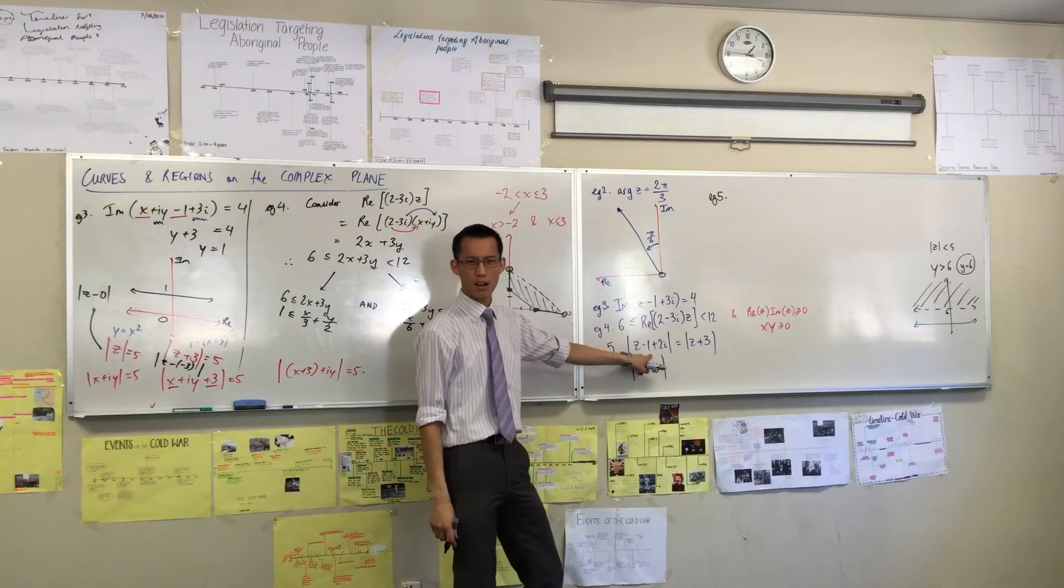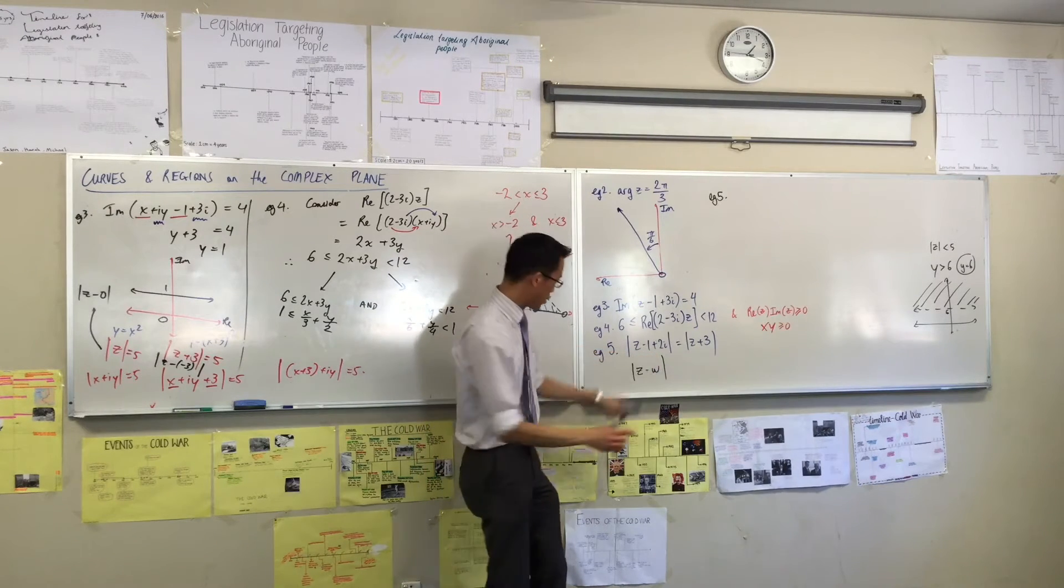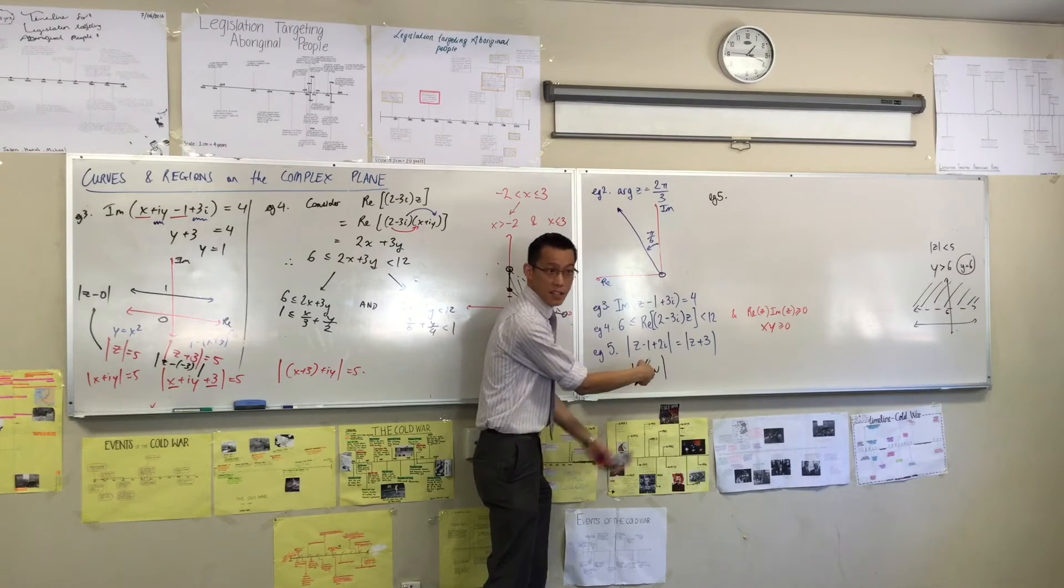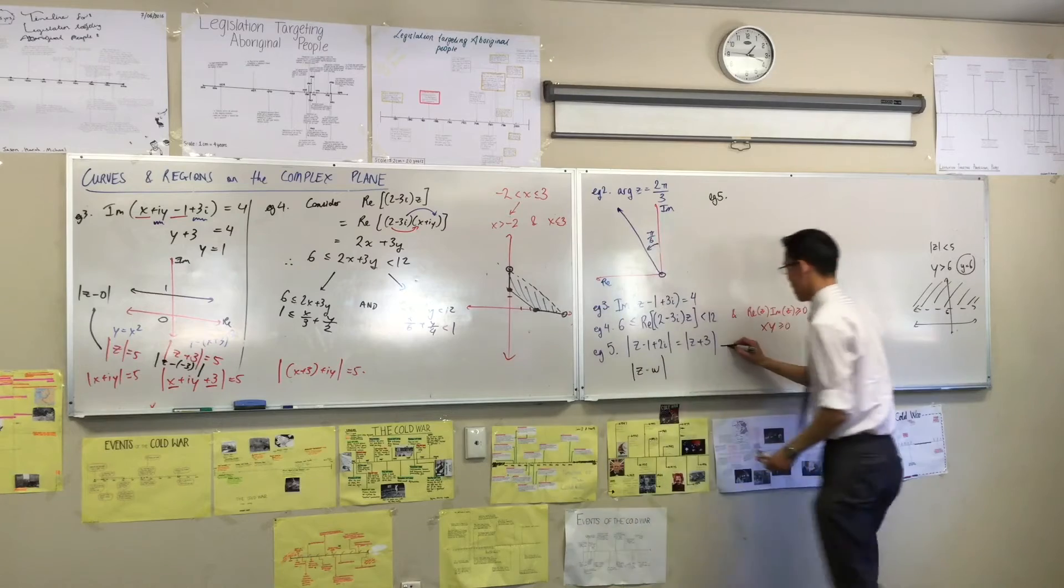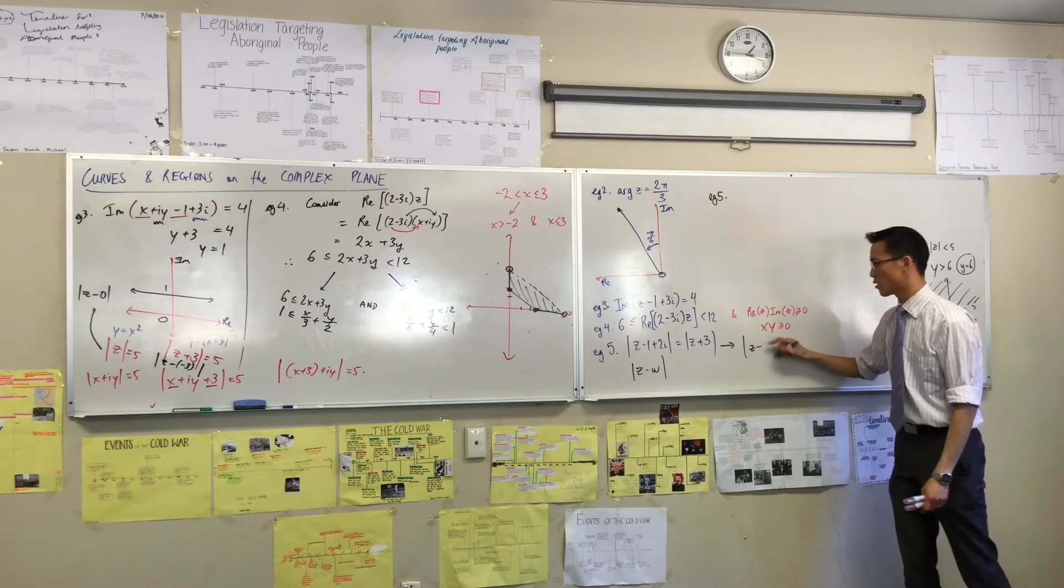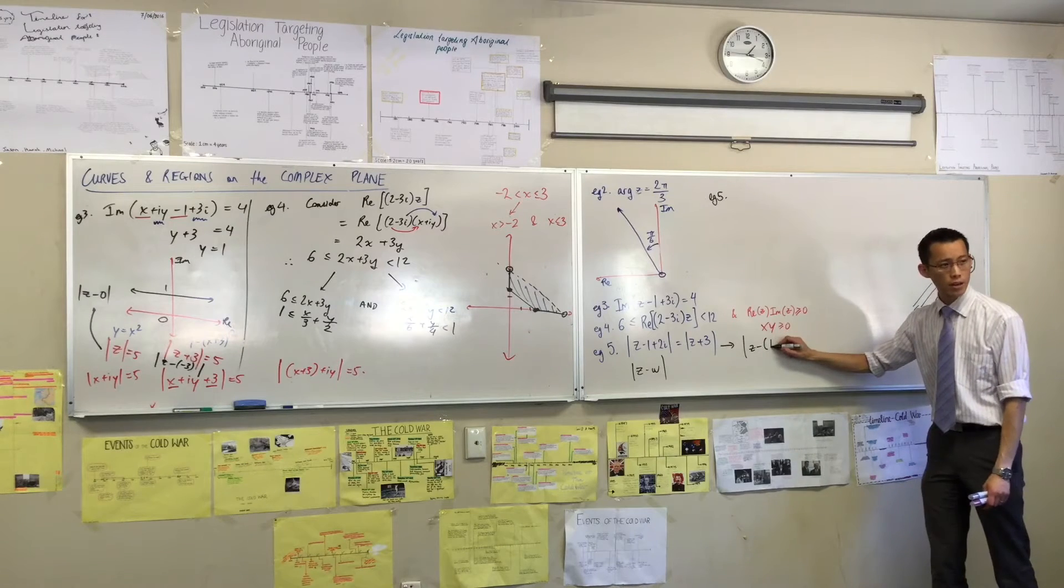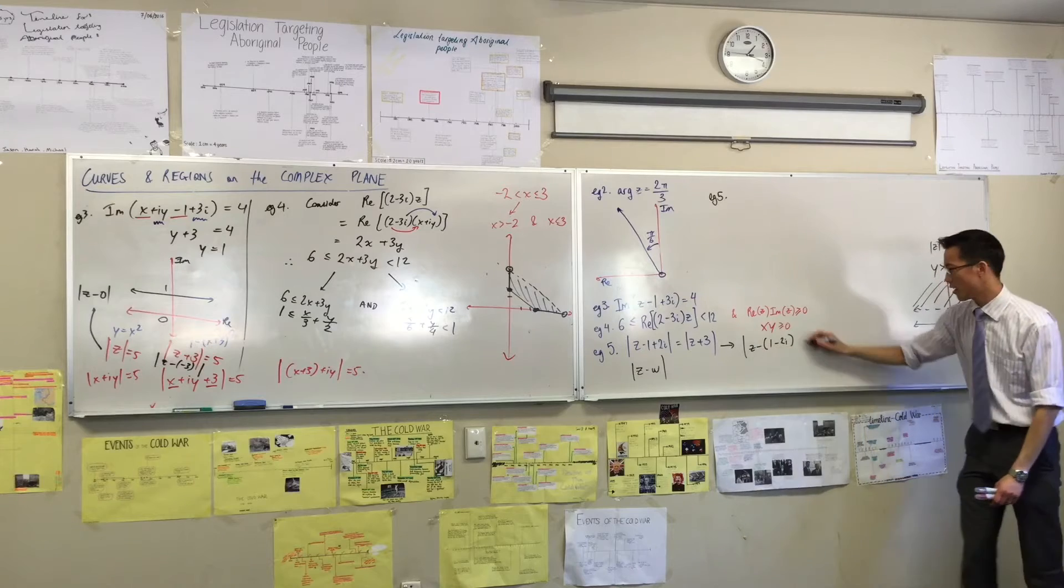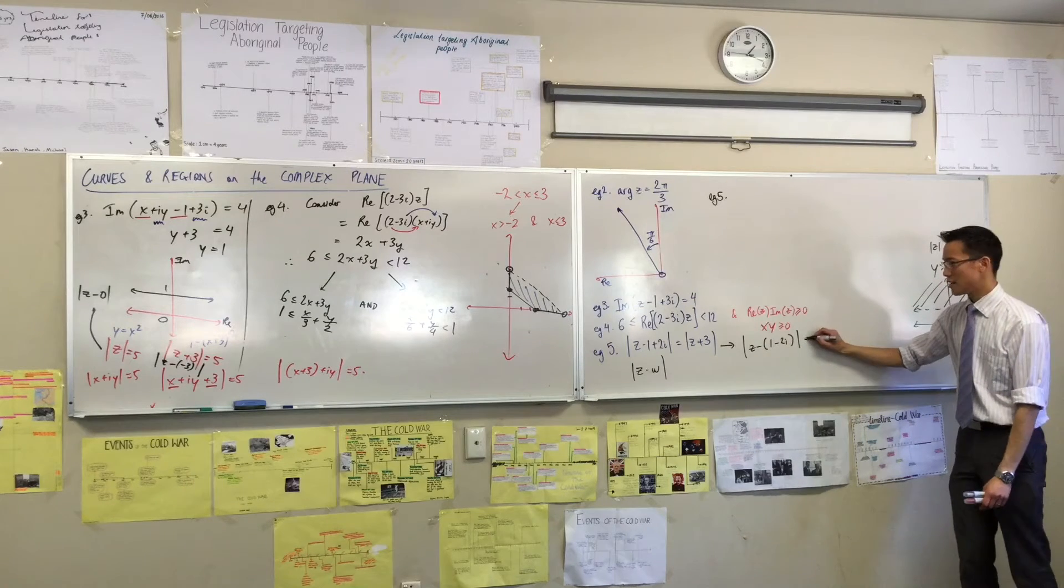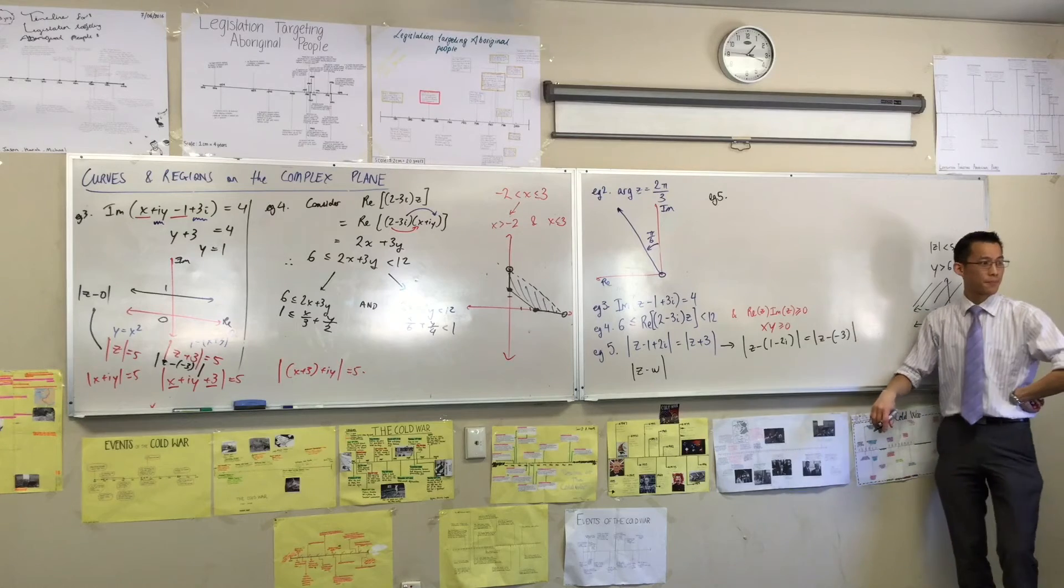Distance from where is this? You've got to be careful, because there's this minus sign that's kind of hiding there. So let me rewrite this whole line in a way that's a little more easy to interpret. This is the distance from, I've just taken out a minus sign. So therefore, it's going to be 1 minus 2i. Do you see how there's a double negative there? Distance from there is the same as the distance from there. Do you agree with that?